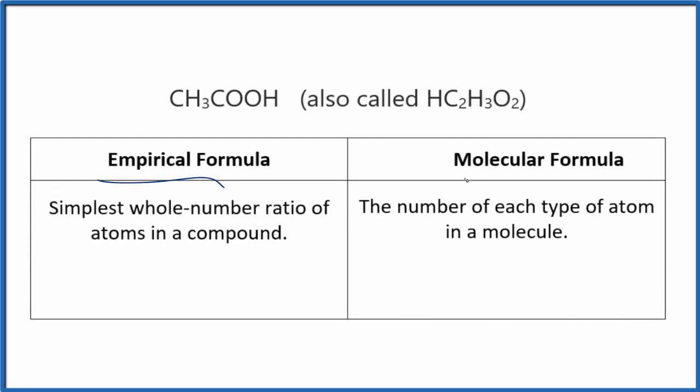Let's take a look at the empirical and the molecular formula for CH3COOH. This is acetic acid. Sometimes you'll see it written HC2H3O2. They're the same thing. So if we wrote the molecular formula, that's the number of each type of atom in the molecule.